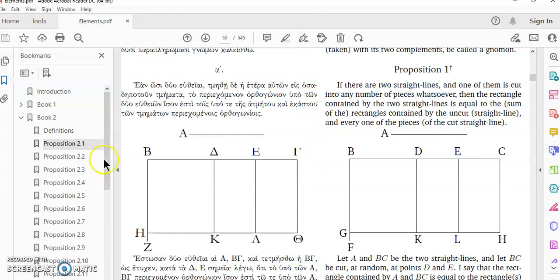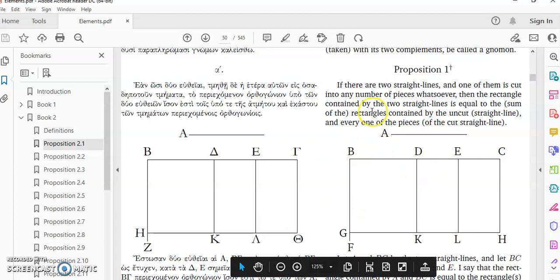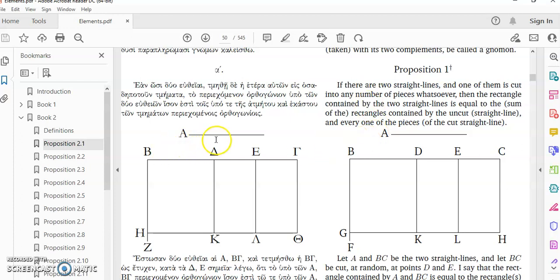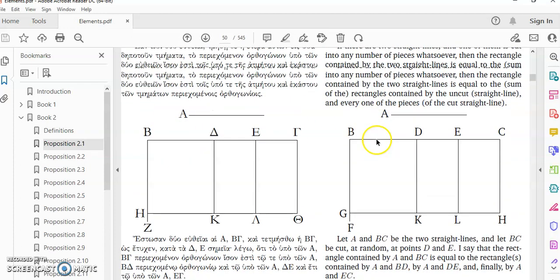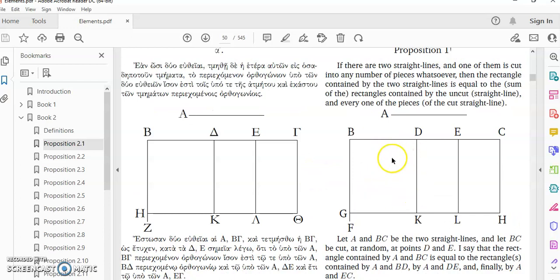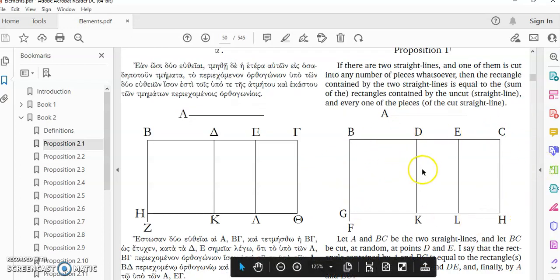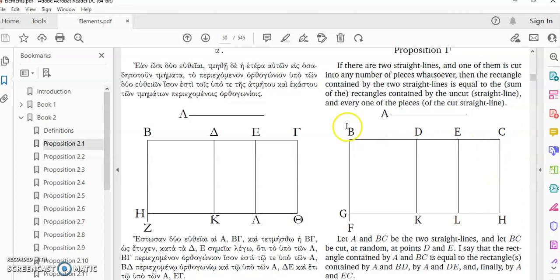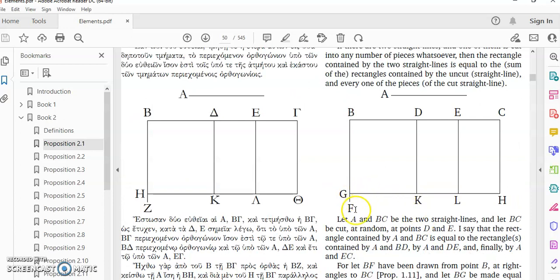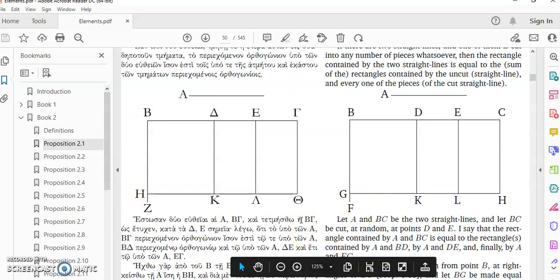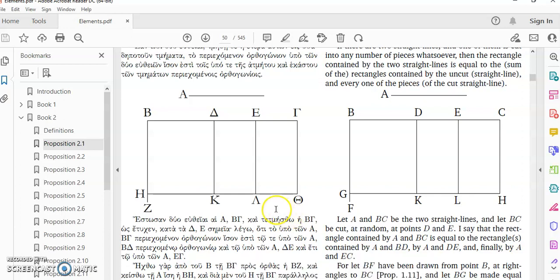The first ten propositions are not really interesting at all because they deal with facts that in effect were addressed in Book 1. For example, Euclid says that if you cut up this whole rectangle into smaller rectangles that the smaller rectangles will be equal to the larger one. That's pretty obvious because one of the common notions says that things which are equal to the same thing are themselves equal.